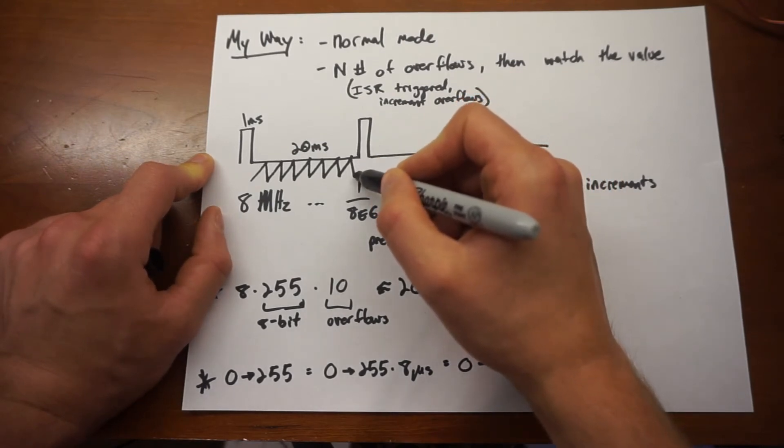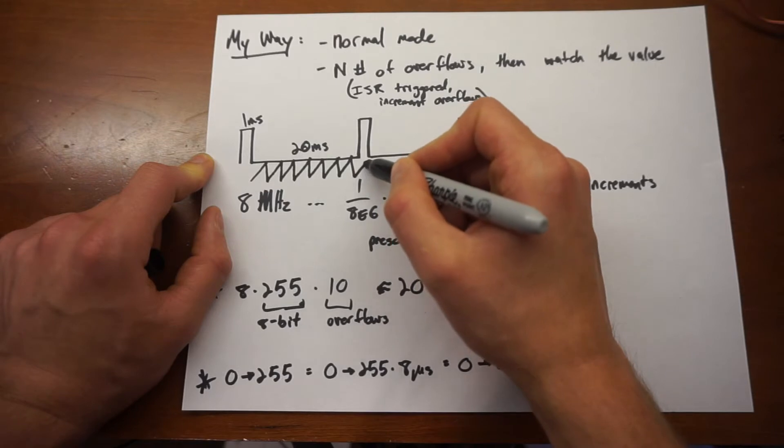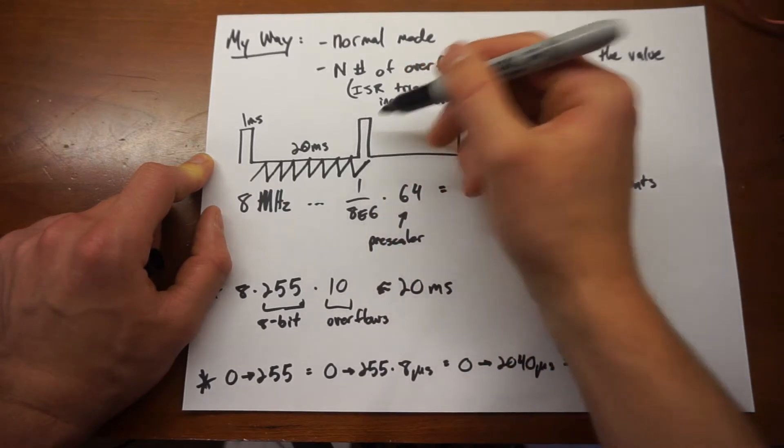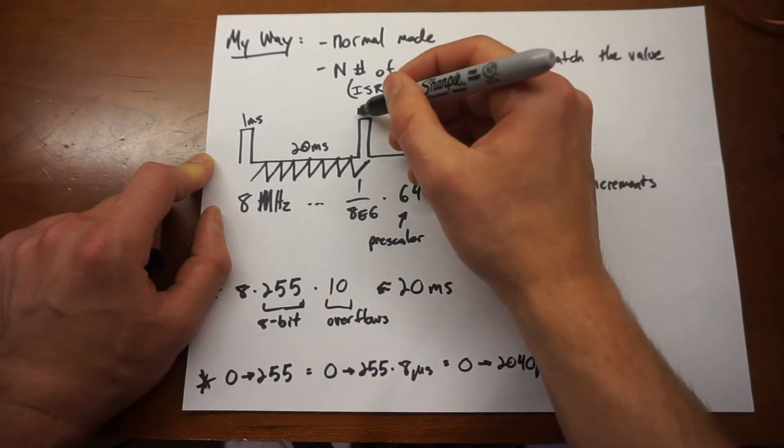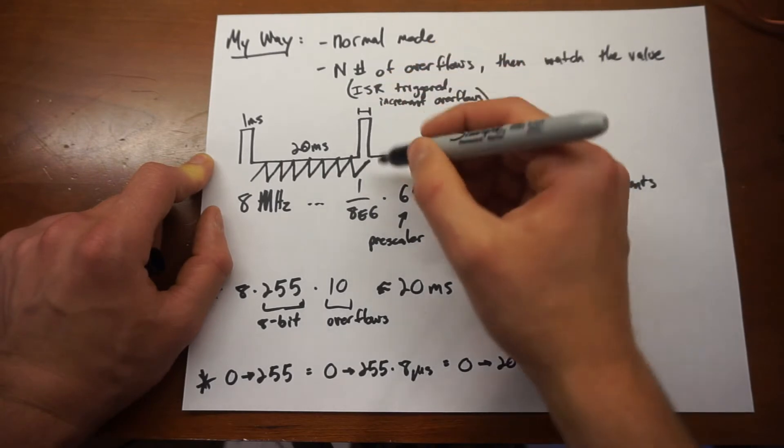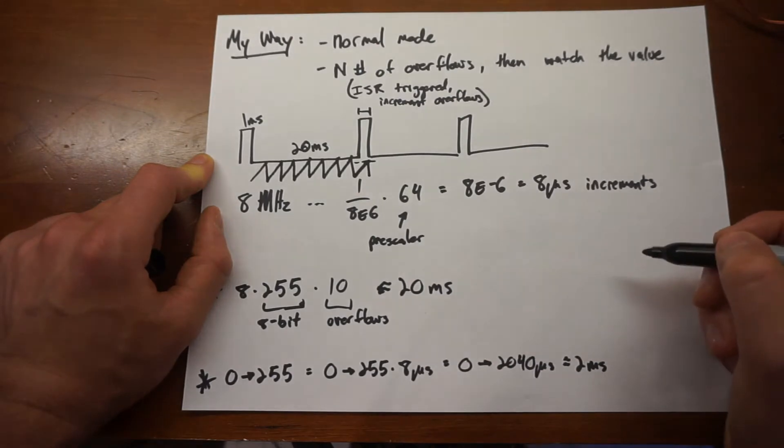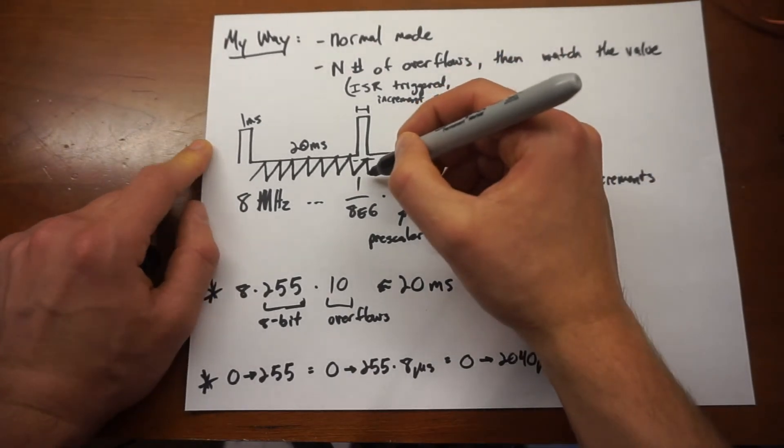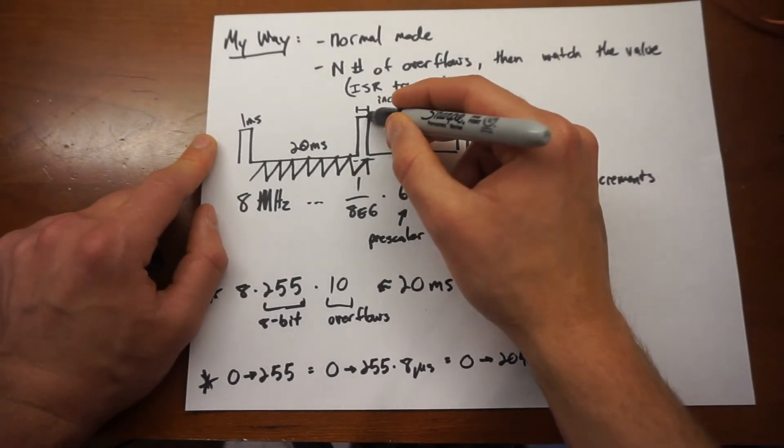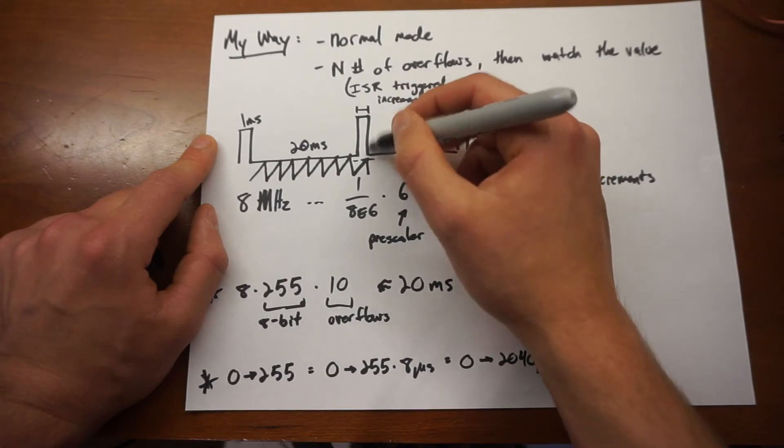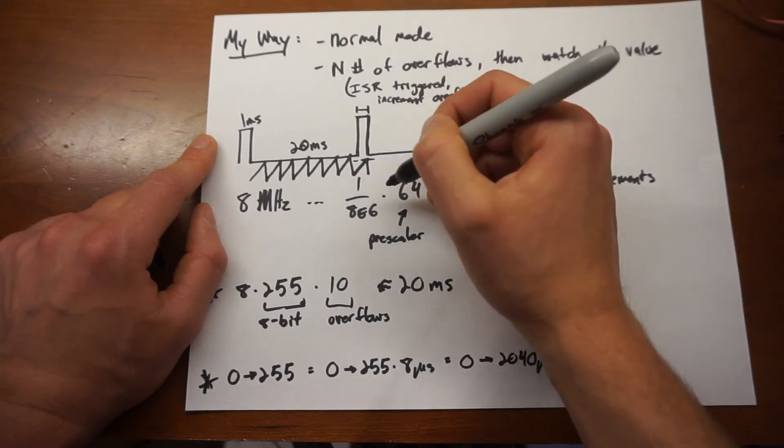Then this value is going to increase until we have a compare value that's mapped to the width that we want of this peak, and when the timer reaches that compare value, it shoots back, it's cleared, and we can fire off this pin to go back off again.